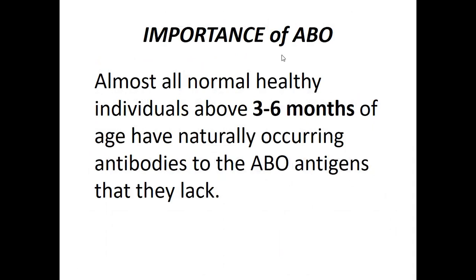Normally, a healthy individual above 3 to 6 months of age has naturally occurring antibodies to the ABO antigens they lack. These naturally occurring antibodies — anti-A and anti-B — are IgM in nature. Since they only develop from 3 to 6 months of age, you do not routinely perform reverse typing on patients below this age group.